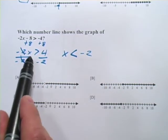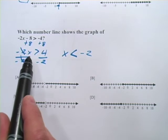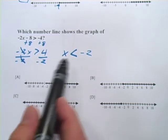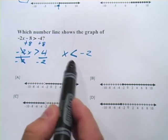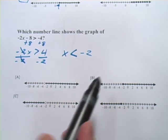So that's the rule to remember. Multiply or divide by a negative, flip the inequality sign. Now we've just got to match this up with the right graph. x is less than negative 2. So let's look.